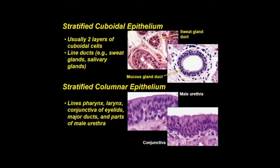Stratified cuboidal and columnar epithelia have limited distribution in the adult. Both contain two or more layers of cells and are mainly protective, better suited than simple epithelia to withstand wear and tear. Stratified cuboidal epithelium, usually two layers of cells, lines ducts of sweat glands and other exocrine glands. Stratified columnar epithelium is found in the pharynx and larynx, conjunctiva of the eyelids, major ducts of exocrine glands, and parts of the male urethra.